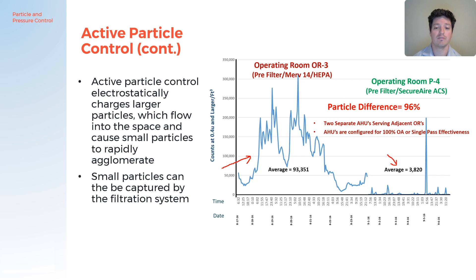Active particle control is suitable for new construction and retrofits alike. It has a low pressure drop, so you typically don't need to upgrade fans, and it can replace a standard MERV 14 filter bank within the air handling system or ductwork. At only nine inches of depth versus up to 12 inches for a typical MERV 14 filter, it can be a direct replacement for that system.